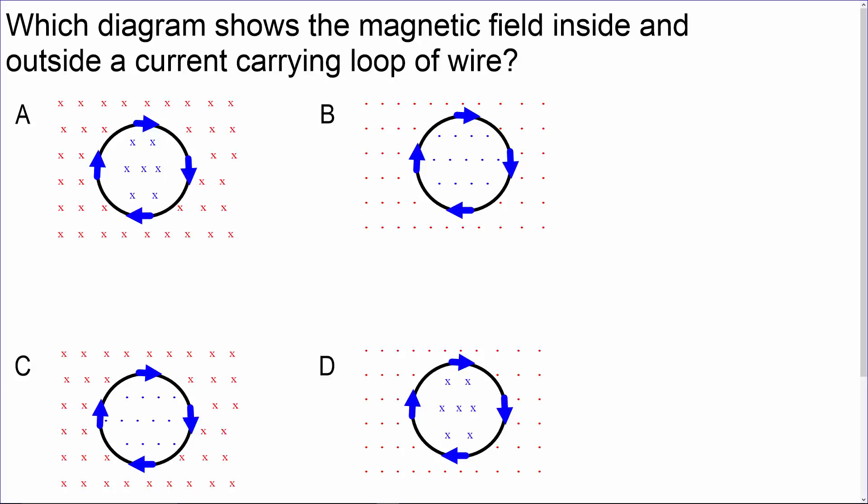We can take our right-hand rule and apply it to any spot on the current-carrying loop of wire. I'm going to choose the very bottom of the loop.